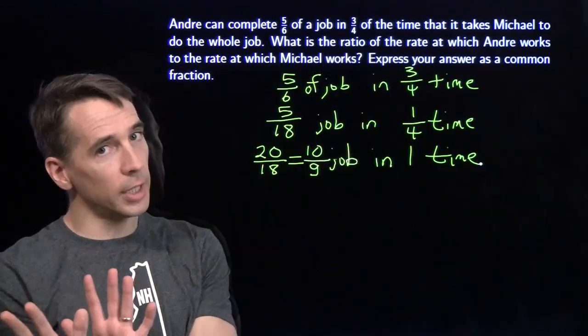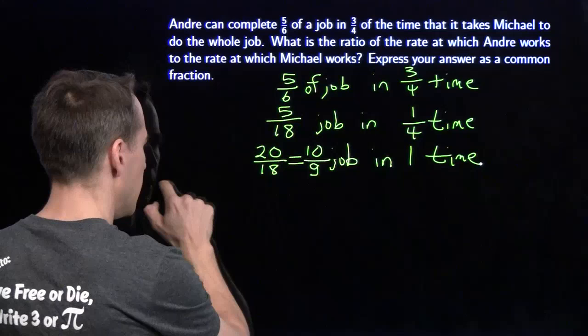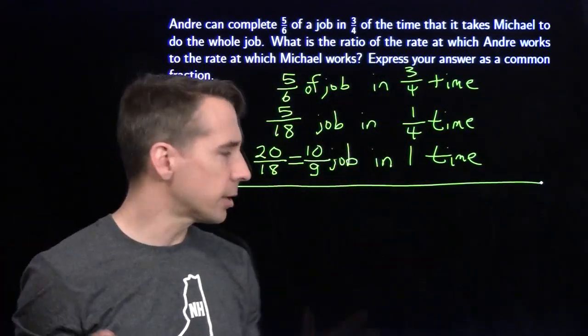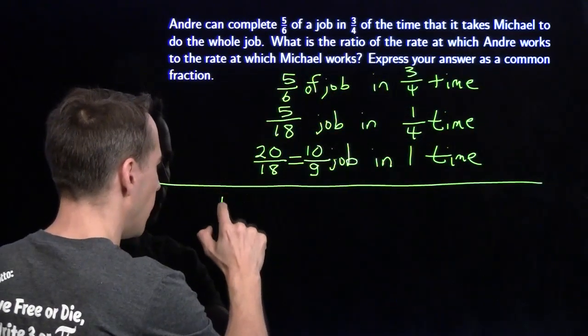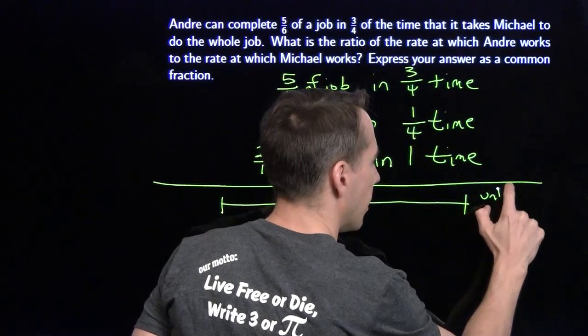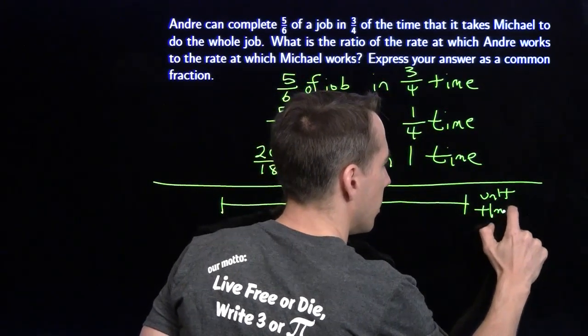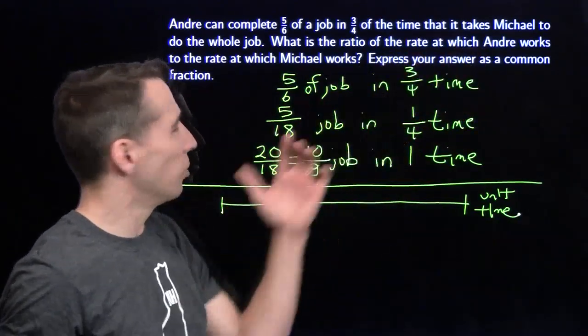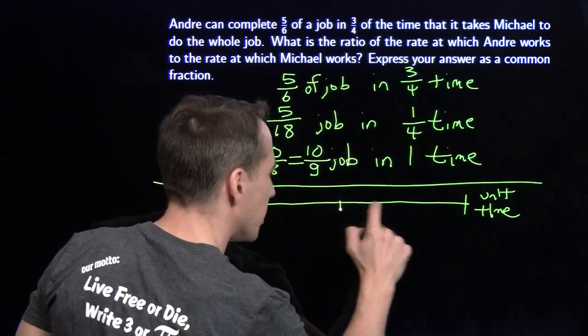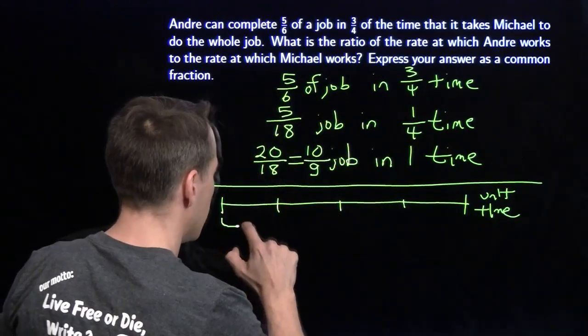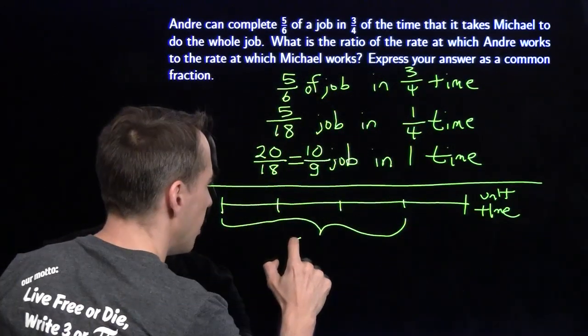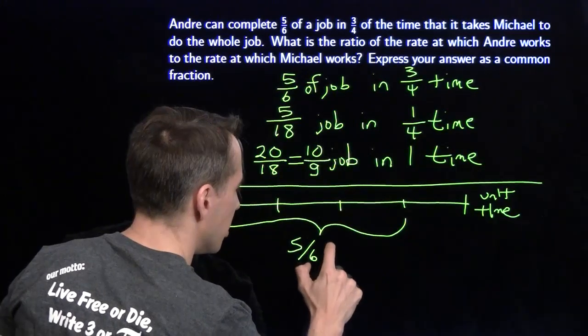Of course, we're going to do the gold standard here. We're going to try to think about this problem in a slightly different way. I like to think in pictures. I'm going to picture 1 unit of time. This is 1 unit of time that it takes Michael to do the whole job. And what we're told is, I can split this into quarters. This is 3 quarters right here. In that amount of time, Andre can do 5 sixths of the job.